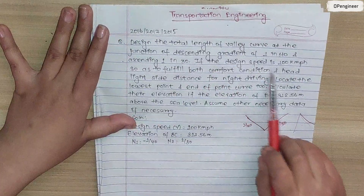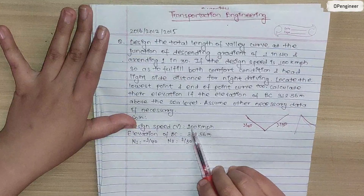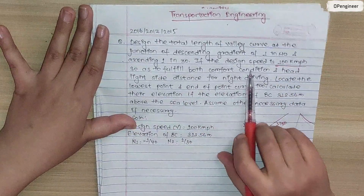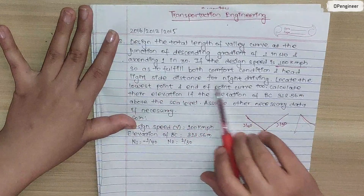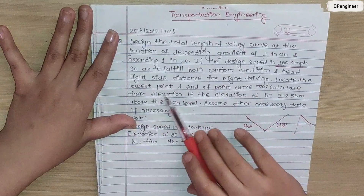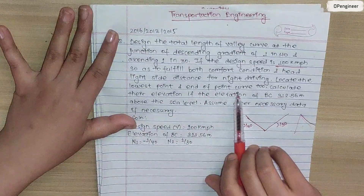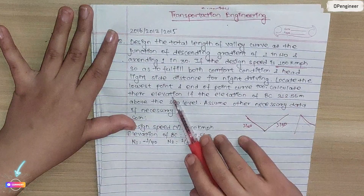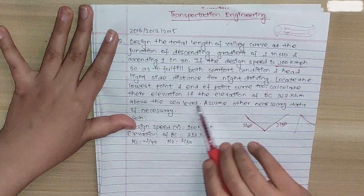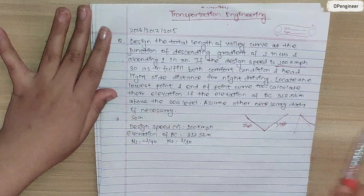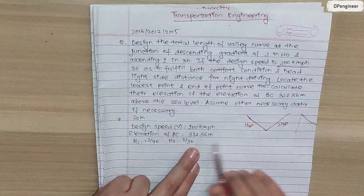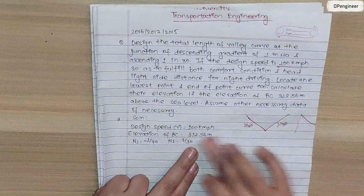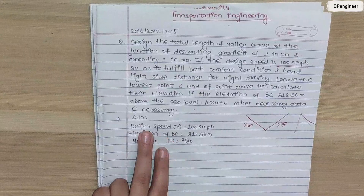The design speed is 100 km per hour. We need to fulfill both the comfort condition and headlight sight distance for night driving. We also need to locate the lowest point and the end of the curve, and calculate the elevation. The beginning of the curve elevation is 312.56 meters above sea level. We will assume other data if necessary.